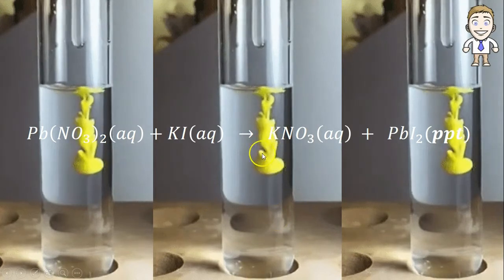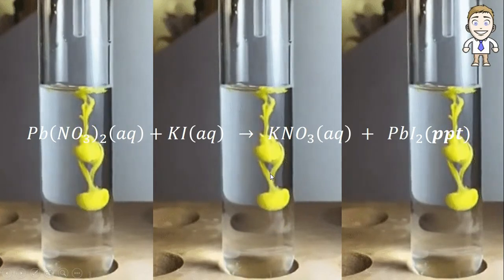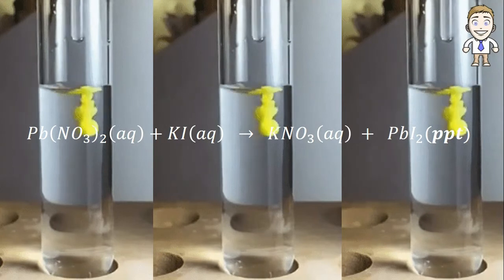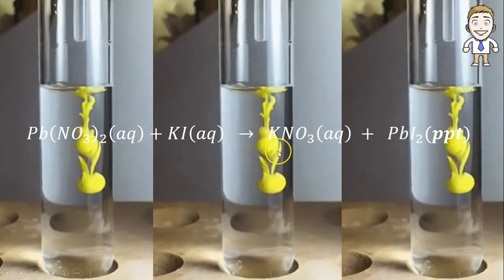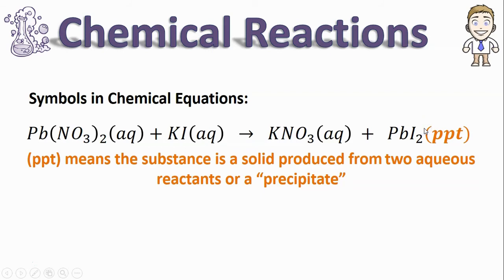That new yellow product is falling because it is a solid—it's a little bit more dense, so it sinks to the bottom. When solids are produced from two aqueous solutions like this, that solid is referred to as a precipitate, and it's called that because it sort of falls to the bottom, much like rain or snow precipitates out of the sky.